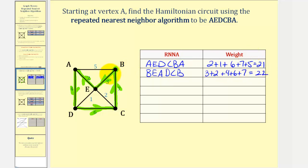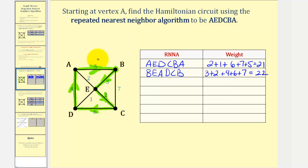For the second circuit starting at B, instead of going E to A, we go E to C. So from B we visit E, then C, then D, then A, and back to B. The circuit is BECDAB with a total weight of 3 + 2 + 6 + 4 + 5 = 20.